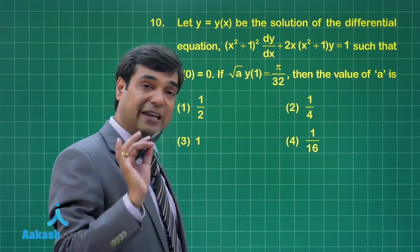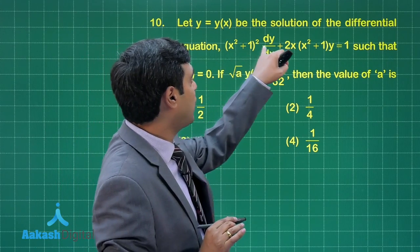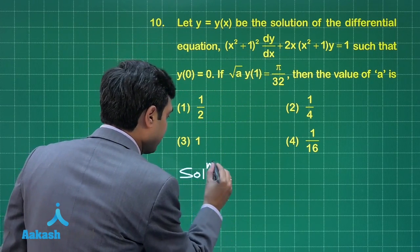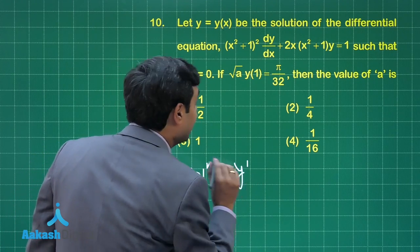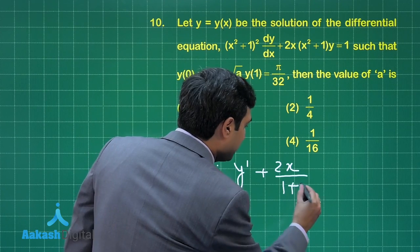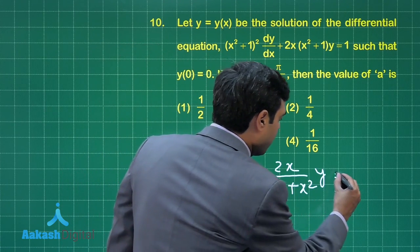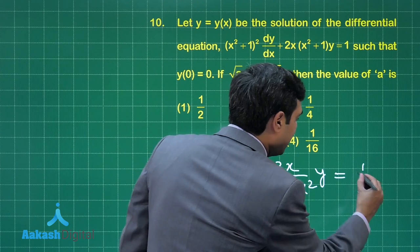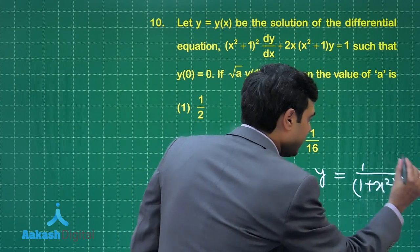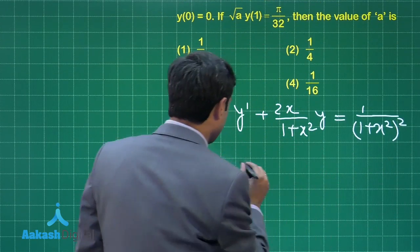We can convert it to a linear differential equation by dividing by (x² + 1)². The equation becomes: dy/dx + (2x)/(1 + x²) · y = 1/(1 + x²)².